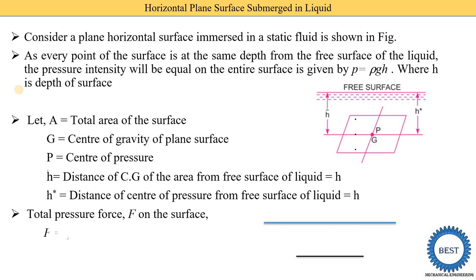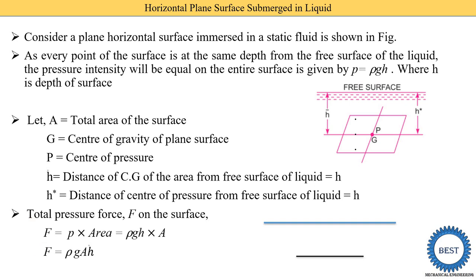Now we find out the total pressure force F on the surface. The equation of force is pressure times area. Pressure is ρgh, so F = ρgh × A. Since for the horizontal case h = h-bar, our equation becomes F = ρgAh-bar. For other cases like vertical planes, the equation is also written as F = ρgAh-bar, so we need to remember this equation.